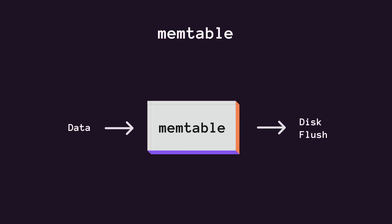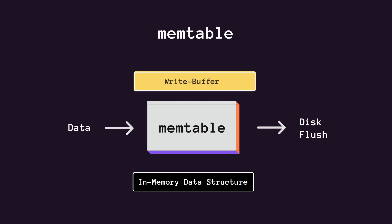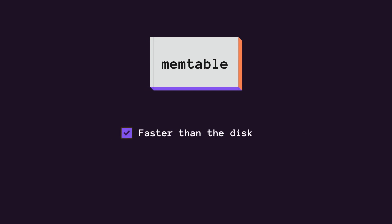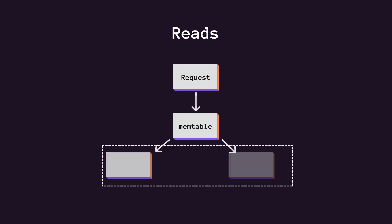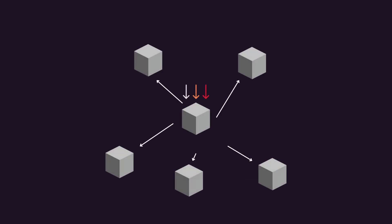Reads, however, need to query the memtable and potentially multiple SSTables — on-disk files — which is a more expensive operation. If users interact heavily with a specific partition, we call it a hot partition. While Cassandra is optimized for very fast writes, ad hoc read queries are very, very slow.